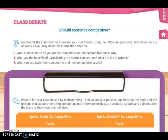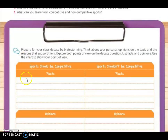On page 287 we have the class debate. You have to tell me: should sports be competitive? With the help of your family — your brother, sister, mother, and father — you are going to answer the questions. When you have done this part, you are ready to prepare for the class debate by brainstorming your personal opinions on the topic and the reasons that support them. Explore both points of view. List facts and opinions and use the chart to show your point of view. This class debate we are going to do in the online class. You have to write facts for whether sports should be competitive or shouldn't be competitive — but include facts and opinions for both sides.